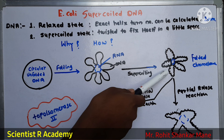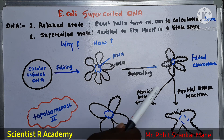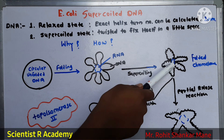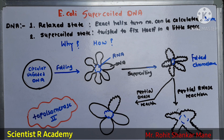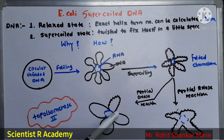Here we can see the supercoiling of the DNA — this is called the folded chromosome or the supercoiled DNA. This supercoiled DNA can be reacted with RNAs or with DNAs. When reacted with partial RNAs, the RNA will be degraded and we can get only DNA. When reacted with partial DNAs, the supercoiled DNA will return to a relaxed state and we can purify the DNA. This is all about E. coli supercoiled DNA.